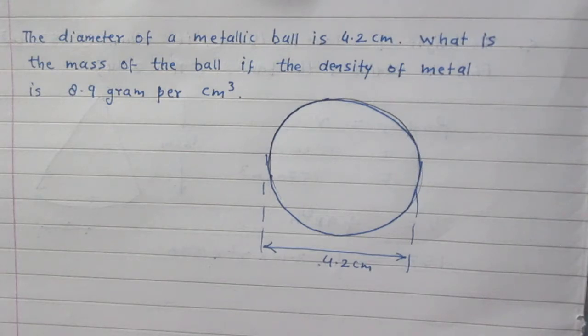In order to find the mass of the ball since we are given the density of the metal, we are to find first the volume of this sphere or you can say volume of this metallic ball.